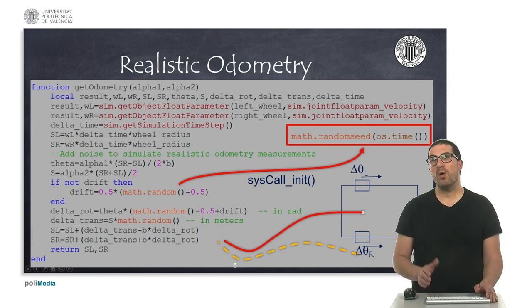And also, don't forget to include a call to the math random seed as I'm indicating here. You need to do this in the syscall init function, so that random numbers that you generate with this math library are initialized with a different seed each time you run the simulation.